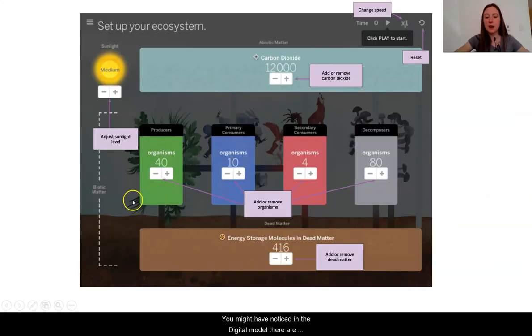You might have noticed in the digital model that there are different things that you can do to the different parts of the ecosystem. It looks like there is sunlight in the ecosystem and that you can adjust levels. There's also different things in the abiotic matter. It looks like you can add or decrease the amount of abiotic carbon dioxide in the digital model. You can add or remove organisms from these different groups. You can add or remove the number or amount of dead matter. You can click play or change the speed to be able to see what's going on.